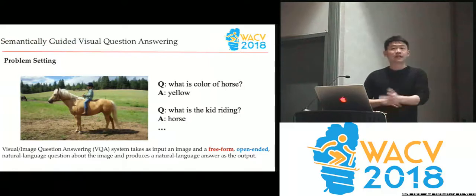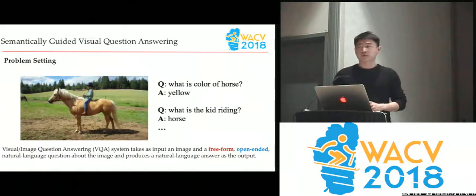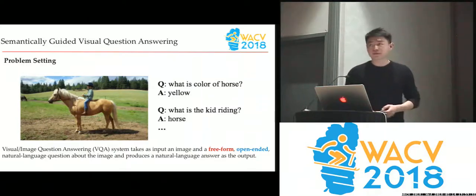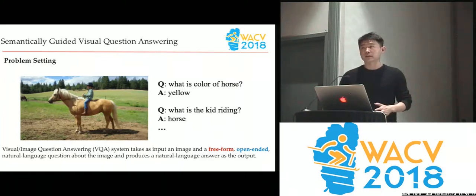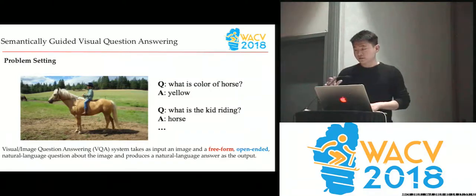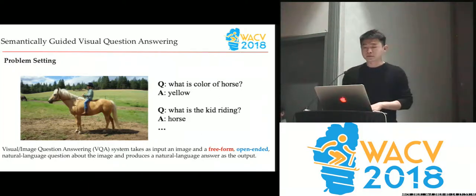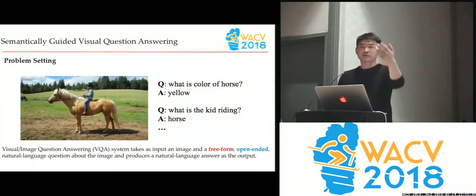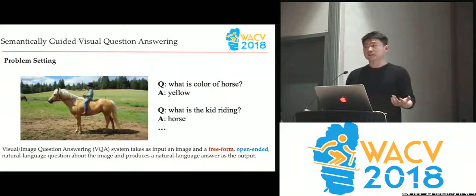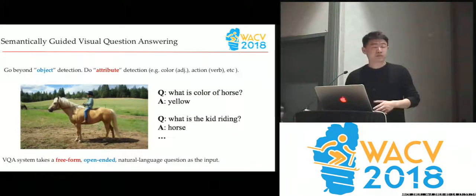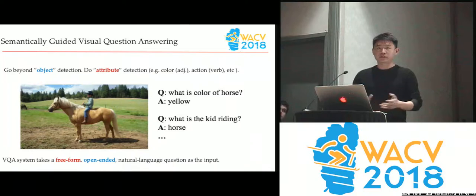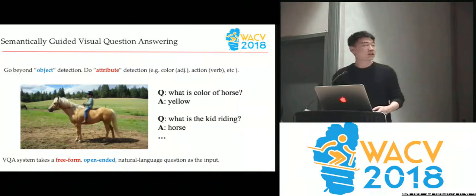The setting of VQA is different from traditional text-based QA — it takes an image as input plus a natural language question. Since this is a pretty new topic, most recent works focus on the reasoning part, for example using attention models. However, our paper is orthogonal to those strategies and methods.